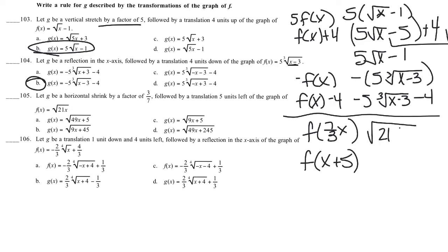So that's followed by f(x plus 5). This is the tricky one. The square root of 21 times 7/3 x is going to give me the square root of 49x, because 3 goes into 21 seven times.